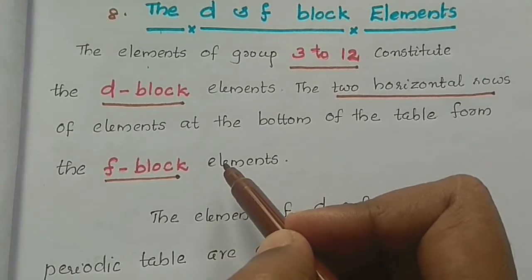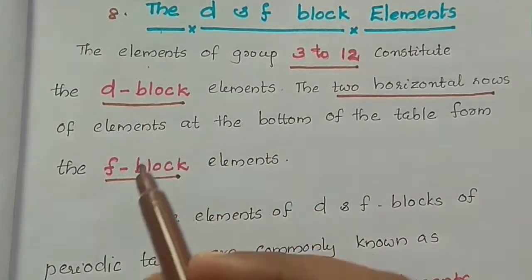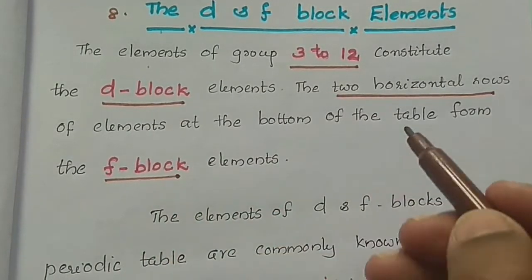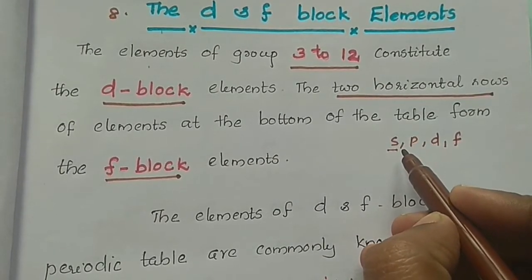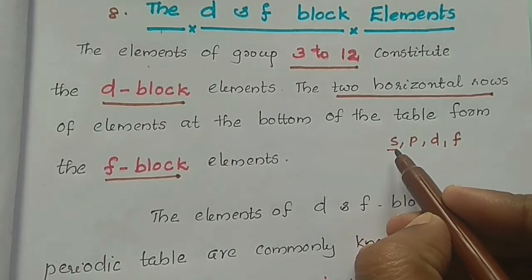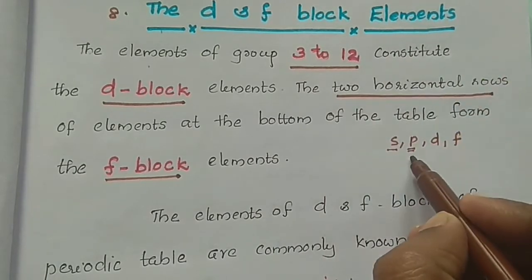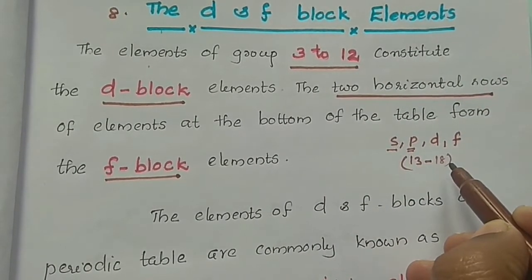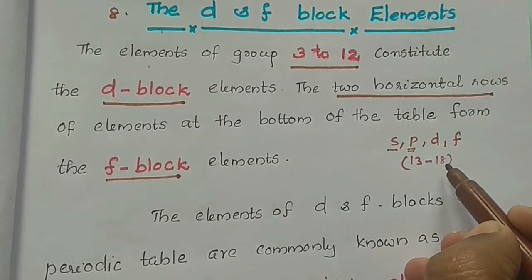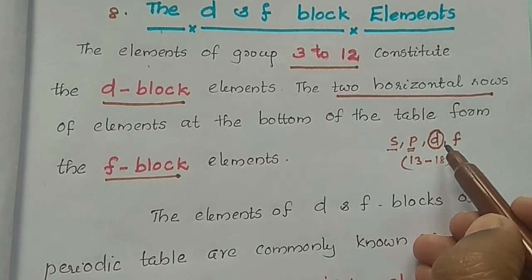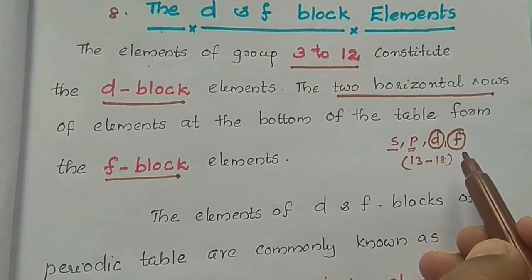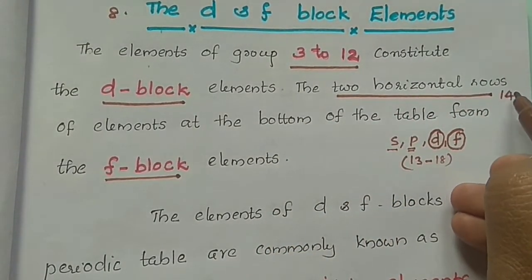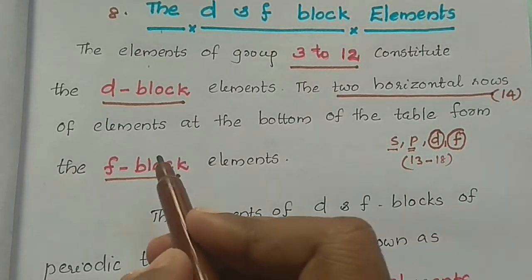If we study D and F block elements, the electrons are filled in specific orbitals. The D block is called D orbitals and F block is called F orbitals. The blocks are classified as S, P, D, and F. The S block is groups 1 and 2, where valence shell electrons are in S orbitals. The P block contains groups 13 to 18, where the outer shell is P orbital. The D block has electrons in D orbitals, groups 3 to 12. The F block has 14 elements in the periodic table, these are F block elements.